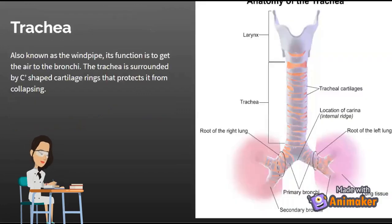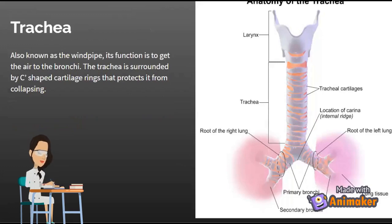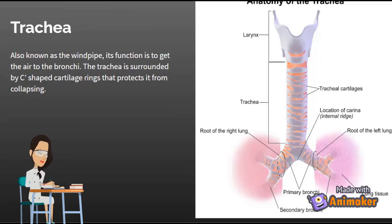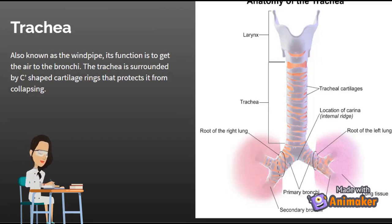Next, we'll be learning about the trachea itself, also known as the windpipe. Its function is to get air to the bronchi. The trachea is surrounded by C-shaped cartilage rings that protect it. These rings help it not collapse. Suppose you put five rings on your finger and hit your finger on something hard — your finger will be protected by those rings. In the same way, these C-shaped cartilage rings protect the trachea from collapsing.